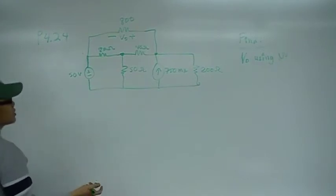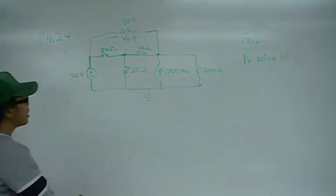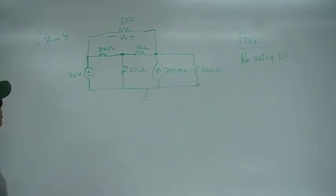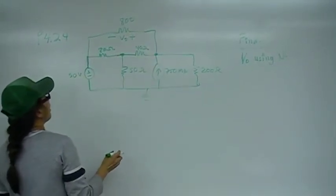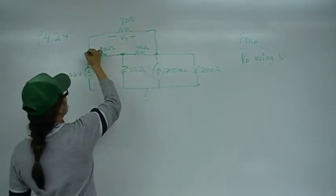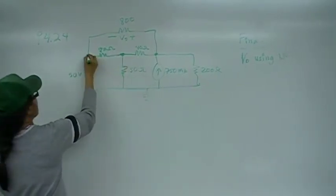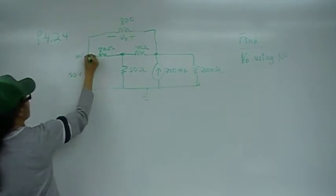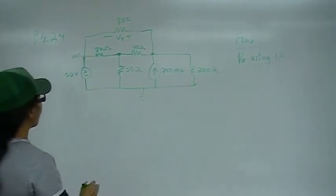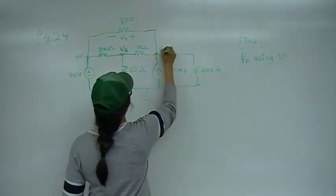Let's get started. This is a very obvious ground right here, so I'm going to take this to be my grounding node. I see the other essential nodes here, here, and here, so there are three essential nodes. I don't need to label this node here because I already know it's 50 volts — it's just a piece of wire, so it's 50 volts at that point. I don't know what this is, so I'm going to call this VA, and I don't know what this is, so I'm going to call that VB.